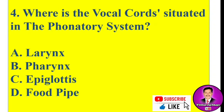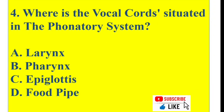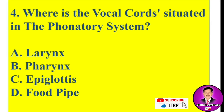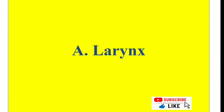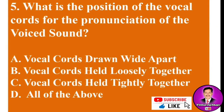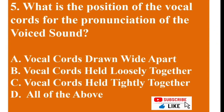MCQ number four: Where are the vocal cords situated in the phonatory system? Options: A) larynx, B) larynx, C) epiglottis, D) foot pipe. The answer is A — the larynx.